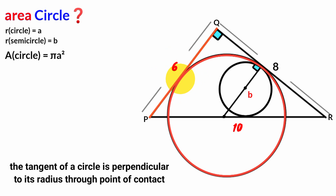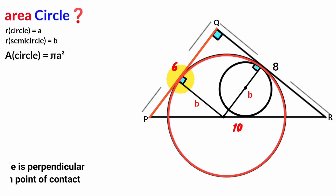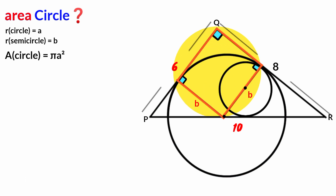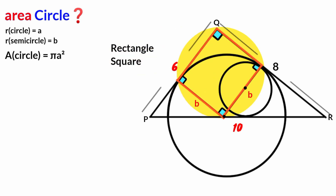This line also touches the circle at a point, making it a tangent. Drawing the radius from the point of contact gives another right angle. Looking at this quadrilateral, we have three of its angles as right angles — therefore the fourth must also be a right angle. The two quadrilaterals with all four right angles are the rectangle and the square. Since two adjacent sides are equal, it cannot be a rectangle, so the quadrilateral is a square.